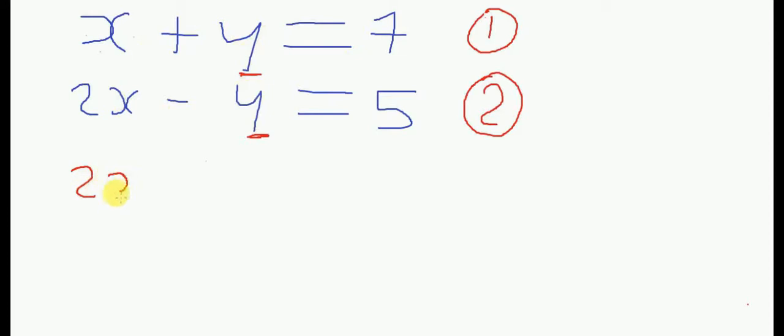I am just going to write 2X plus X plus Y minus Y equals 7 plus 5. Since we have unlike terms, we are going to add the equations.